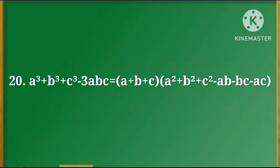20. a cube plus b cube plus c cube minus 3abc is equal to (a plus b plus c) into (a square plus b square plus c square minus ab minus bc minus ac).